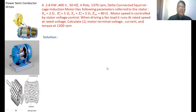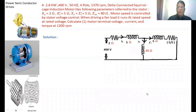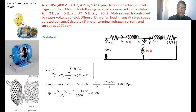Calculate the motor terminal voltage, current, and torque at 1200 RPM. We are using the equivalent circuit of the induction motor where the core loss resistance is neglected. The slip of the induction motor S = (synchronous speed - actual speed) / synchronous speed = (1500 - 1370) / 1500. Here 1370 RPM is the full load speed given in the problem, so this slip corresponds to the full load speed.